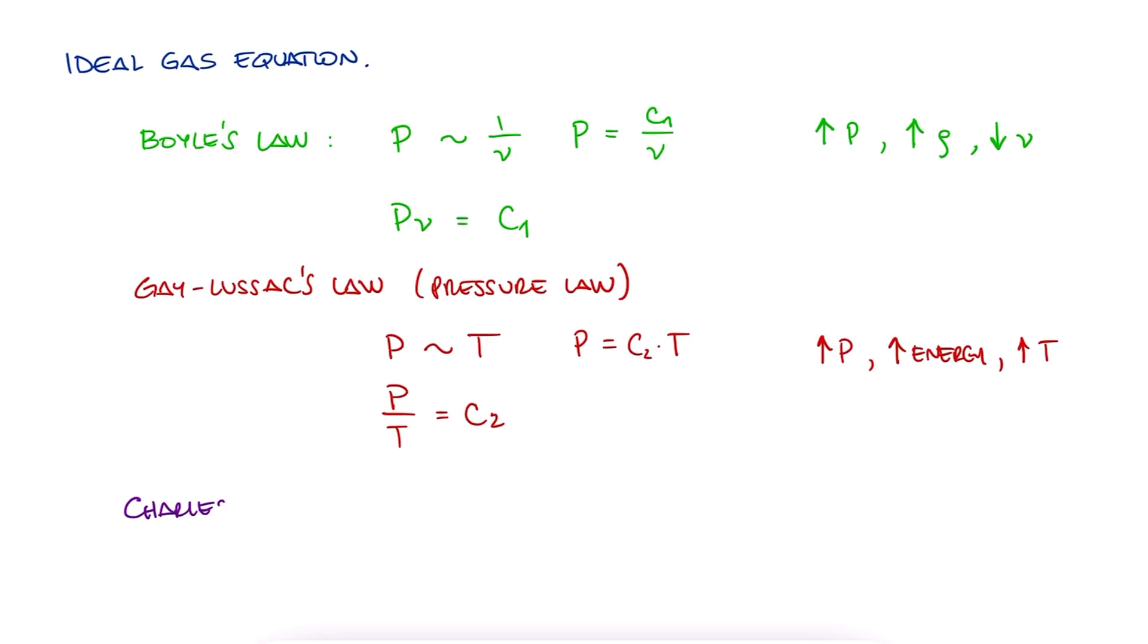This means P over T is a constant. And finally, Charles' law states that the specific volume is directly proportional to temperature. More temperature, more energy for molecules to shake making it a larger volume, decrease in density, or increase in specific volume. V over T is a constant.